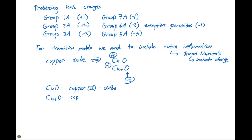Cu₂O is going to be named Copper(I) oxide. So with these transition metals, they exist in varying oxidation states, or with varying charges, so we need to indicate that in parentheses to distinguish between the two forms.